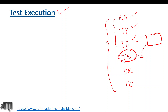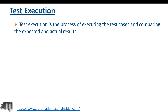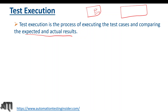Then we'll execute our test cases as part of the test execution process. There are some preconditions and we have to set up the environment as well. In simple terms, test execution is the process of executing the test cases and comparing the expected and actual results. While writing the test cases, we wrote expected results — for example, what will happen when we enter a valid username and valid password and click the sign-in button.